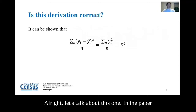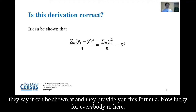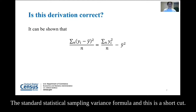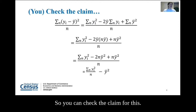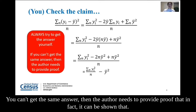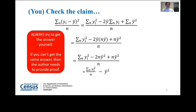Let's talk about this one. In the paper, they say 'it can be shown' and they provide a formula. This is actually something we go through in MathStat 201 — it's a standard statistical sampling variance formula, and this is a shortcut. You can check the claim for this, and lo and behold, they were right. Always try to get the answer yourself when you're given a formula, especially if they're claiming that something is true. If you can't get the same answer, then the author needs to provide proof that in fact it can be shown that.